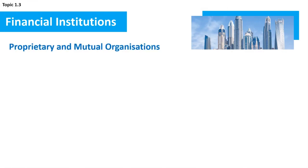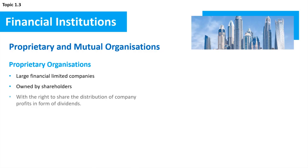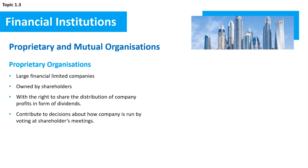Proprietary and Mutual Organisations. Proprietary organisations account for most of the large financial institutions and are limited companies owned by shareholders, who have the right to share in the distribution of company profits in the form of dividends, and can also contribute to decisions about how the company is run by voting at shareholders' meetings.